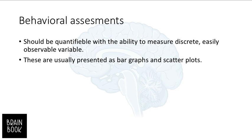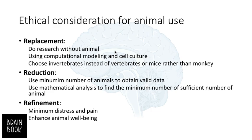For example, it tells us what is the effect of these genes, proteins, and neurons that result in some specific behavior. The behavioral assessment should be quantifiable, with the ability to measure discrete and easily observable variables. These results are usually presented as bar graphs and scatter plots. If you consider some behavioral paradigms in your study, in the results you need to interpret and demonstrate the data with bar graphs and scatter plots.